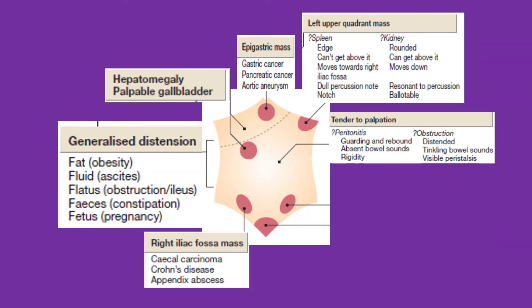The degree of tenderness also differs depending on the cause. When it is due to peritonitis, there will be guarding and rebound tenderness, absent bowel sounds, and rigidity. If it is due to obstruction, there will be distension, tinkling bowel sounds, and visible peristalsis.